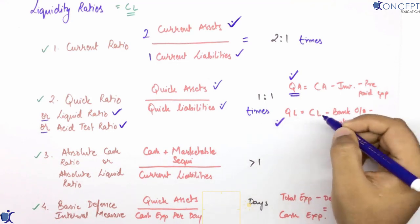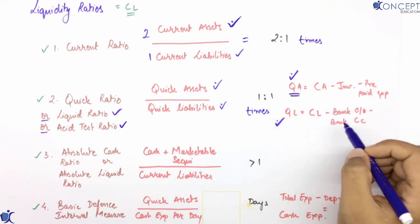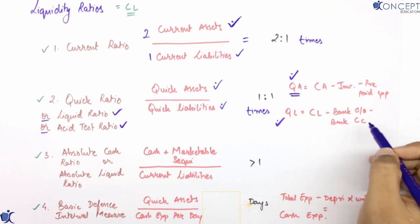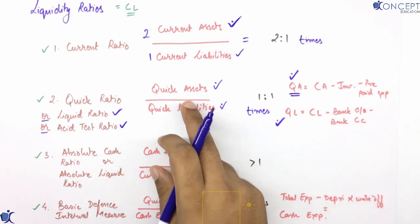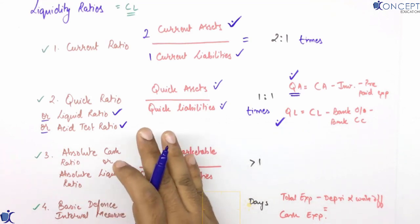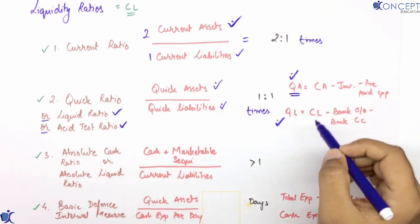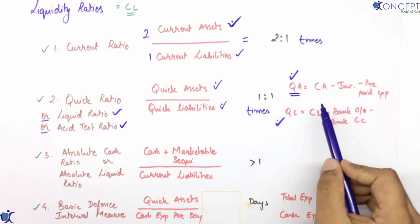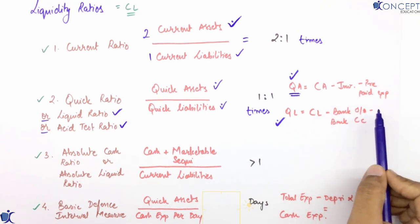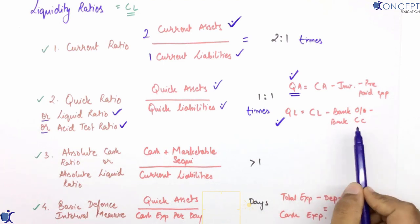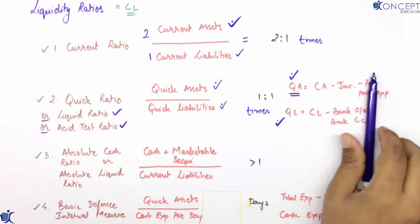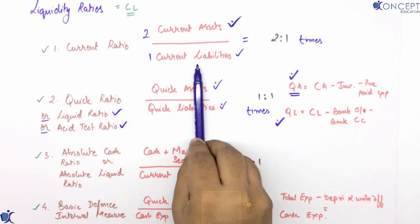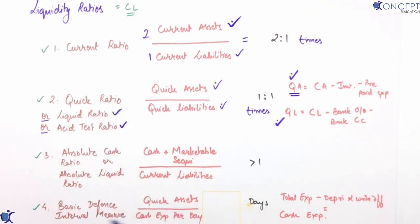Similarly, to find quick liabilities: current liabilities minus bank overdraft minus bank cash credit (CC/OD). So quick assets aur quick liabilities current assets aur current liabilities se nikal sakte hain. Quick assets by quick liabilities karo toh quick ratio mil jaayega.